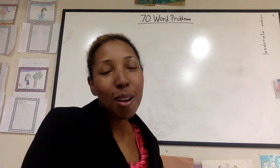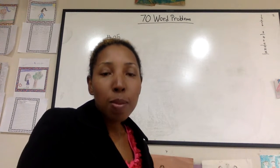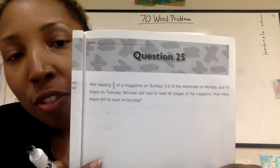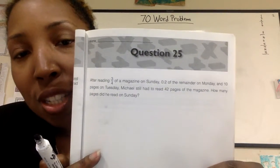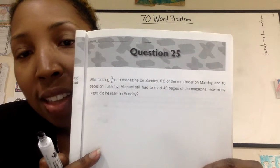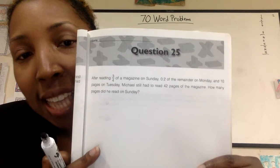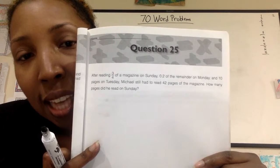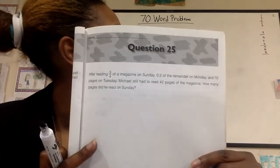Hello and welcome to 70 Word Problems. Today we're going to be doing problem number 25. After reading three-fourths of a magazine on Sunday, two-tenths of the remainder on Monday, and ten pages on Tuesday, Michael still had to read 42 pages of the magazine. How many pages did he read on Sunday?